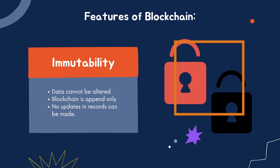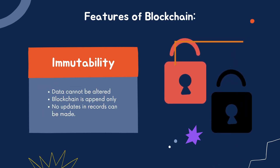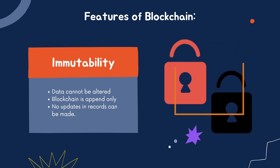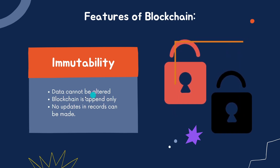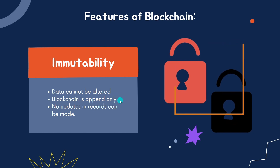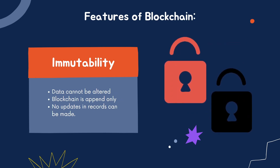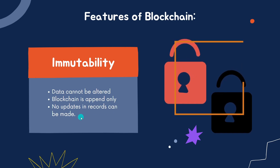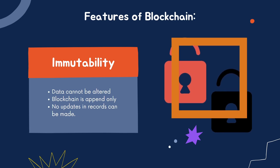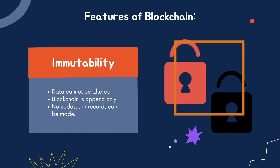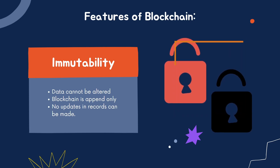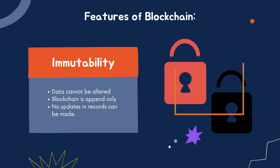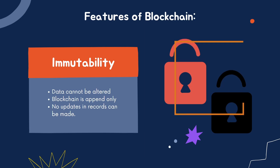The second feature is immutability. Data that is uploaded on blockchain cannot be deleted ever. Data cannot be altered — blockchain is append-only, meaning we cannot remove or delete data, we can only add to it. No updates to a record can be made. For example, if I make a transaction setting my name to 'Yash', I cannot change that to something else. That is why blockchain is immutable.